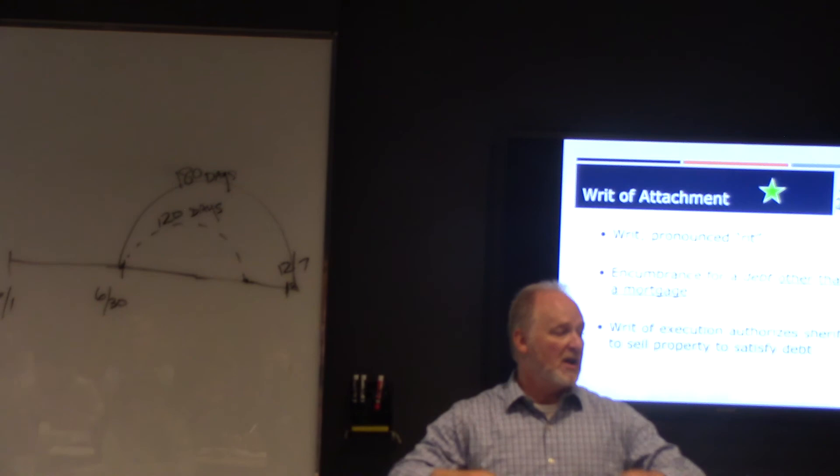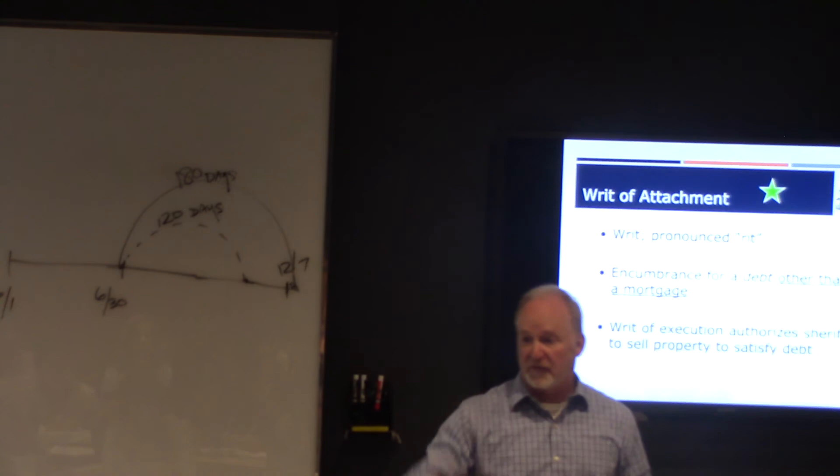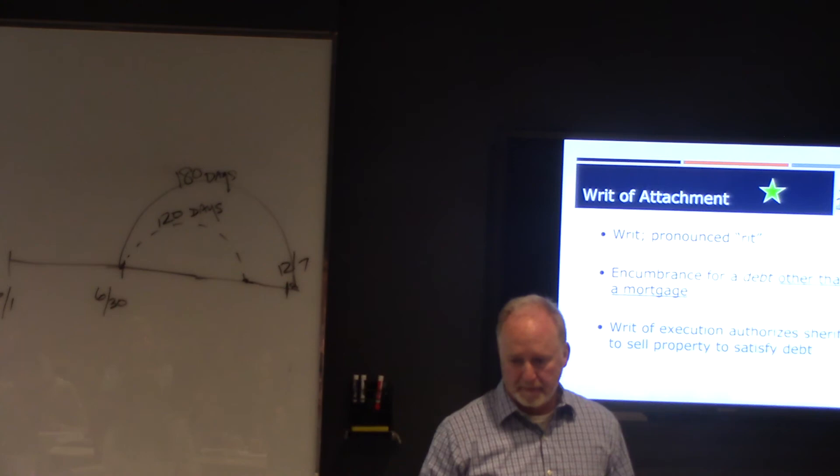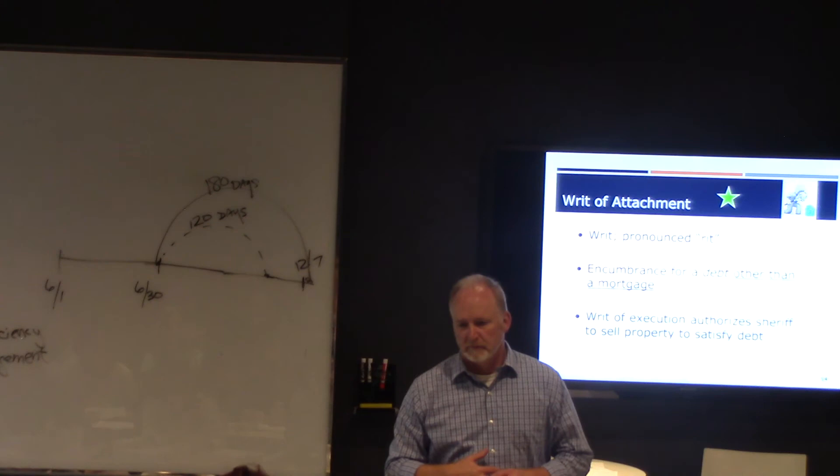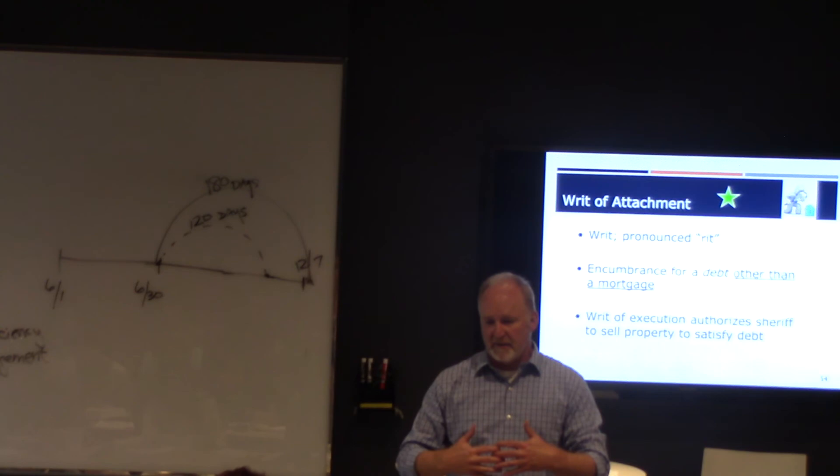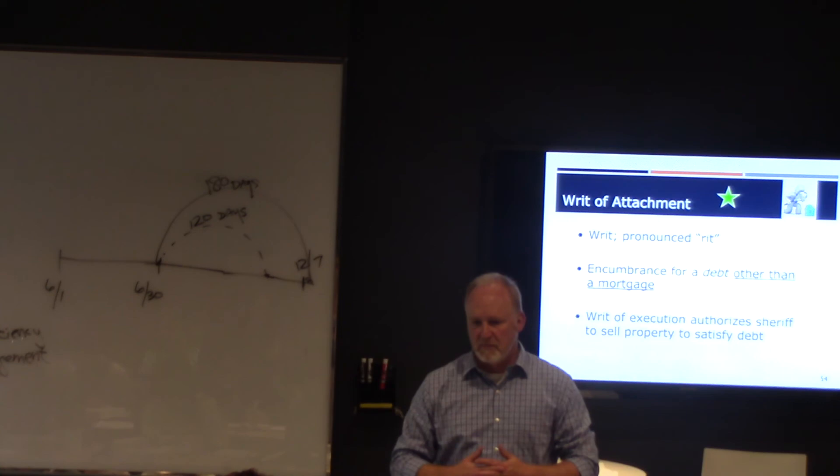Writ of attachment. I'm filing a suit to go after you for a judgment. But, writ of execution, I won the judgment and you're still not paying me, I'm now going to ask the sheriff to go attach your property, sell it at public auction so I can get my money. So, for the writ of execution, is that something you're actually filing or is that just the action? It's an action. It's a process. You're filing a writ that actually tells the... So, the writ is a filing that's going to be filed with a lawsuit.